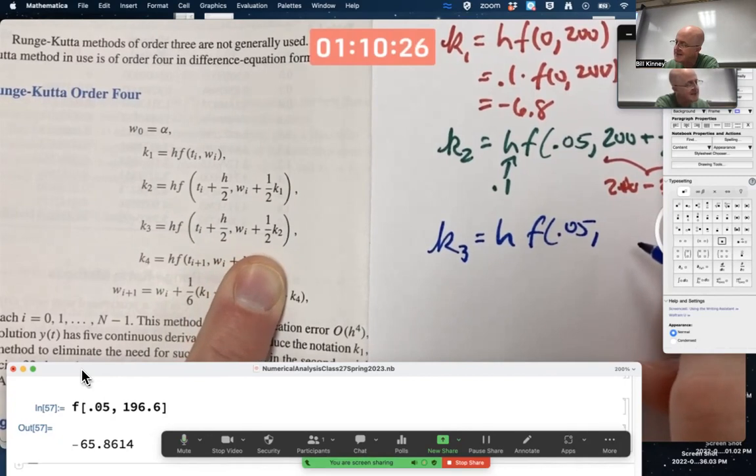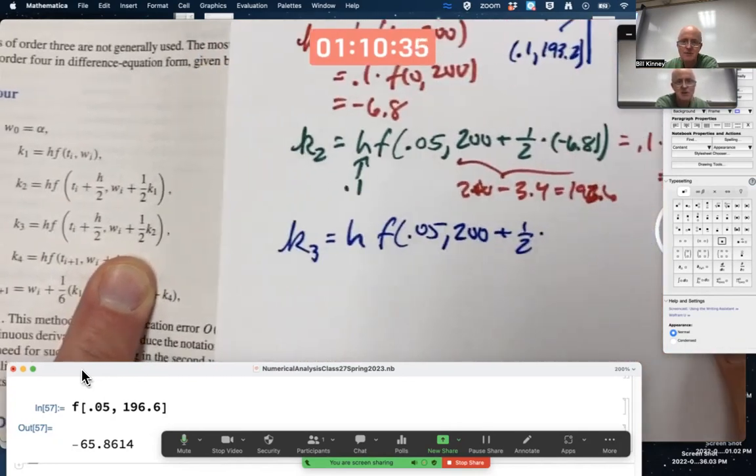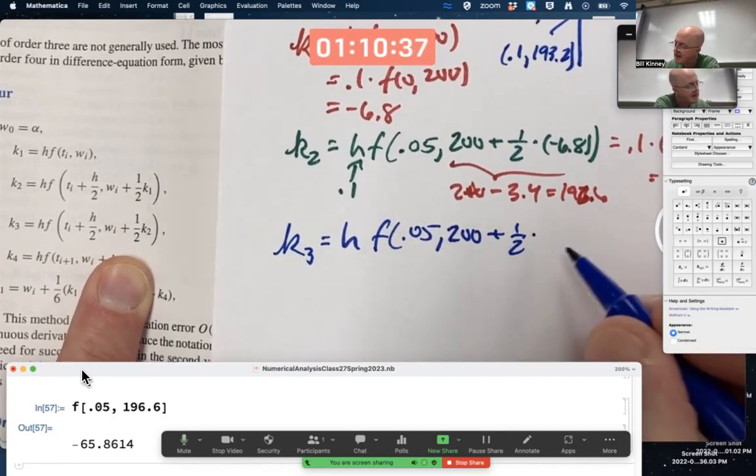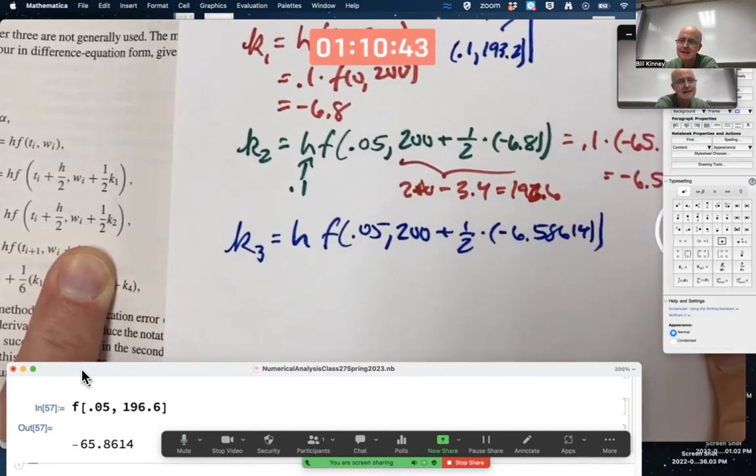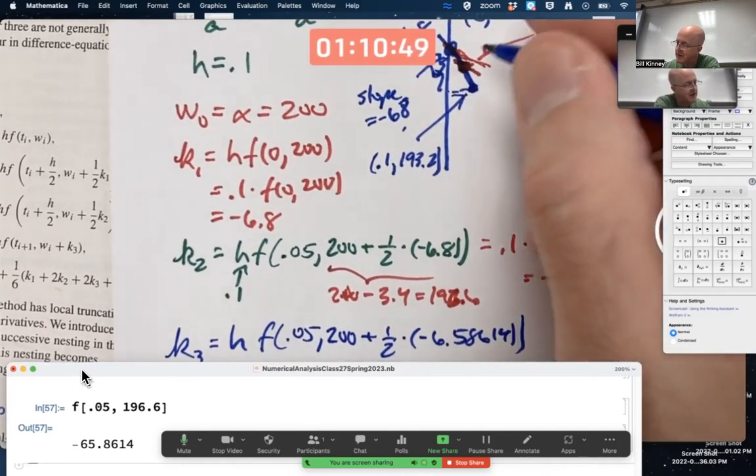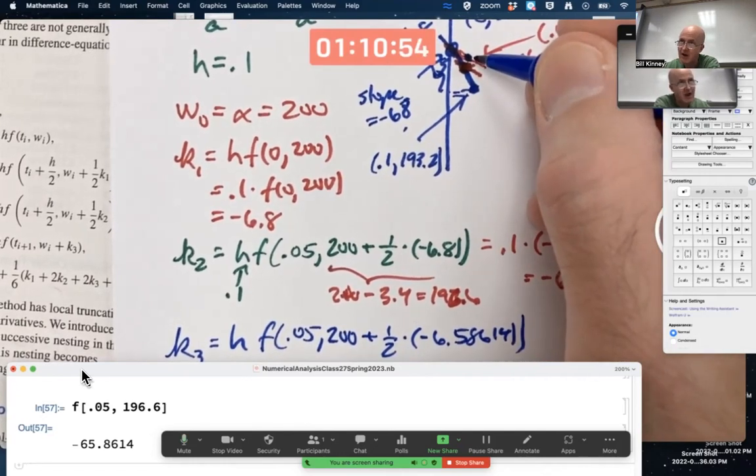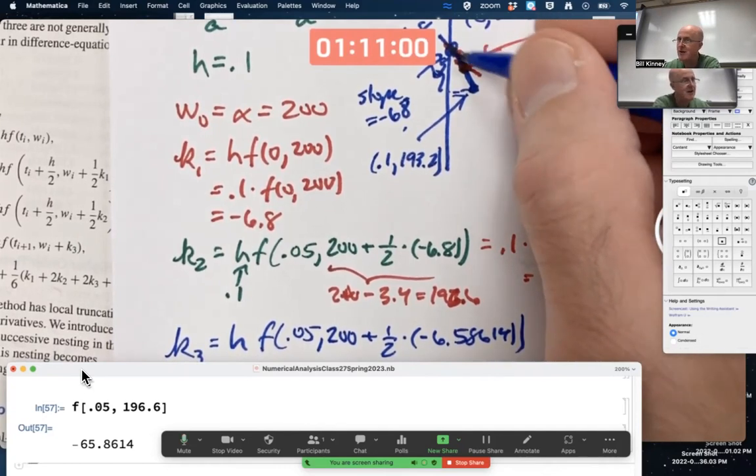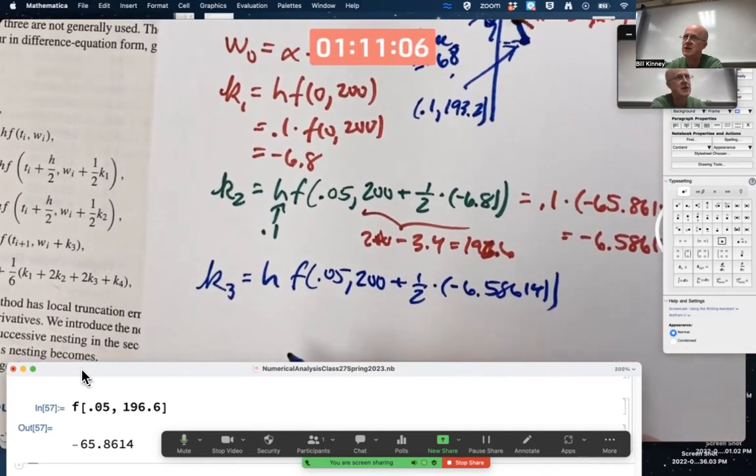So K3 is H times F of T_i plus H over 2, so that'll be 0.05 again, W_i plus 1/2 K2, the previous K2 we just found. 200 plus 1/2 times, we just found this K2 to be negative 6.58614. So it's like we're using, it's like we're now using this red line and following it for half a unit, and using the slope there as well. Get another line and follow that line, 0.1 units to the right.